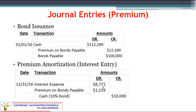The way to remember it is to remember what side the premium goes on. We started with a credit, so we have to debit it to reduce it, and then it's the one-tenth amount.